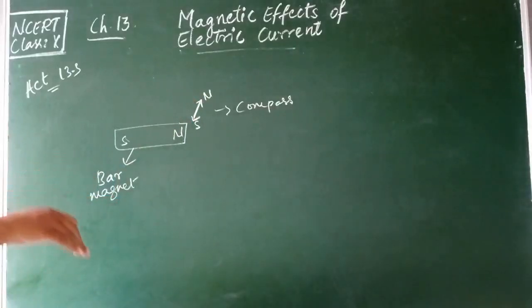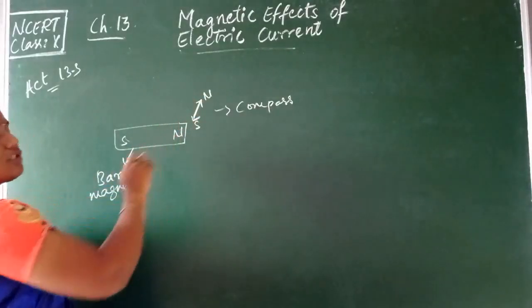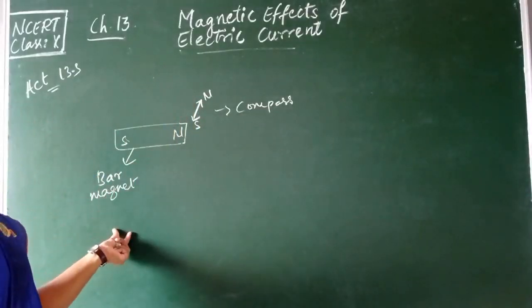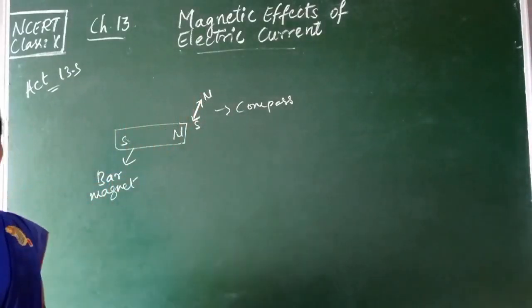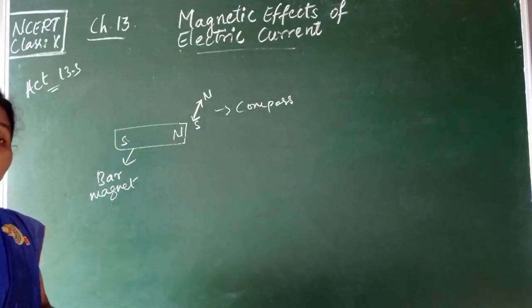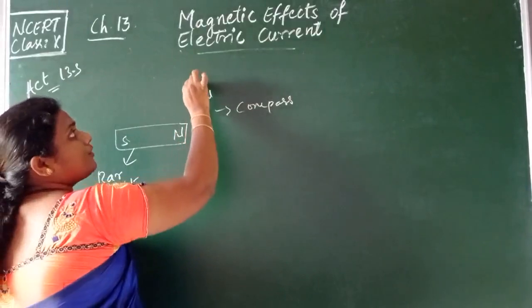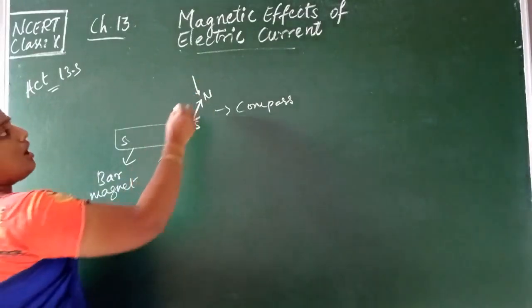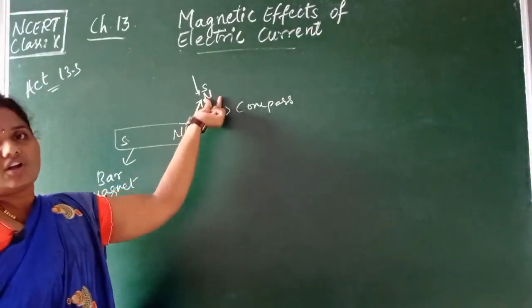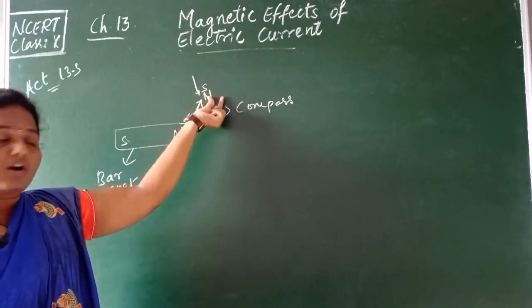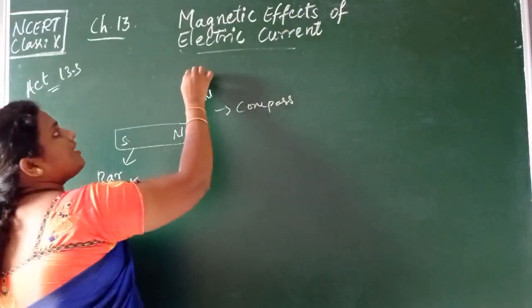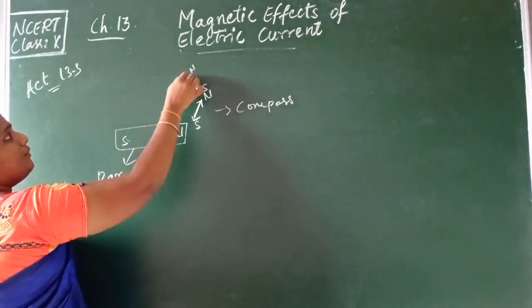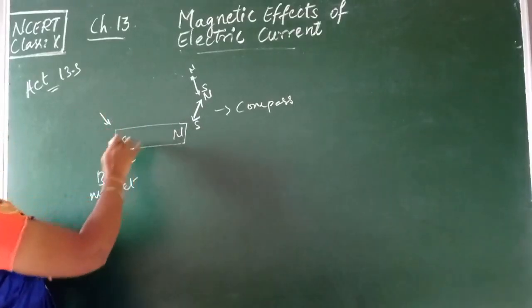After noting the position, we mark the point and change the position of the compass so that the previous north pole position now becomes the south pole of the compass. We repeat this marking and changing of positions every time until we reach the south pole of the bar magnet, at which point the north pole of the compass is towards the south pole of the bar magnet. We must mark all these points.